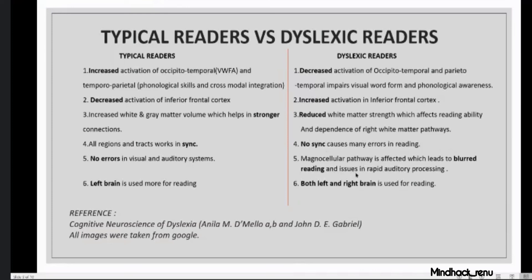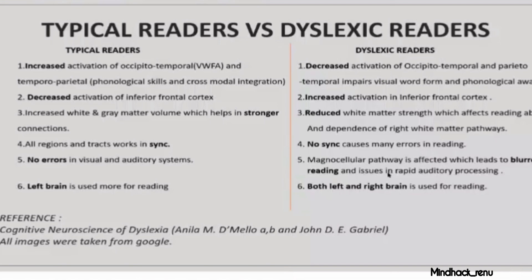The major disappointing thing is that there is no sync between regions, and there are a lot of errors. The magnocellular pathway in the lateral geniculate nucleus has impaired development, leading to blurred reading and difficulty with rapid processing of information. Left brain is primarily used for reading in typical readers, while dyslexic readers use both left and right brain. Additionally, dyslexic children are most likely to also have ADHD — the two often come together. References used are the listed paper and images from Google.